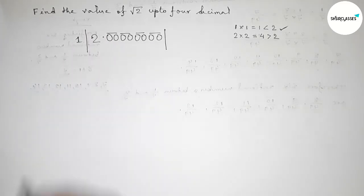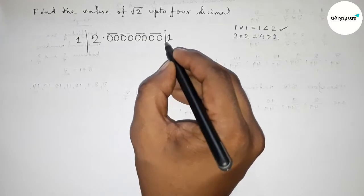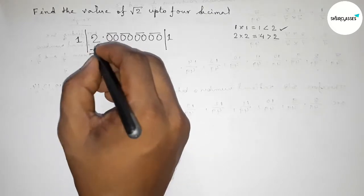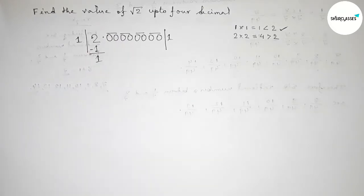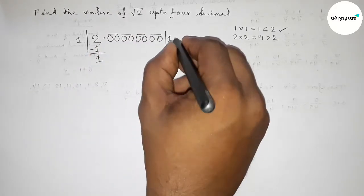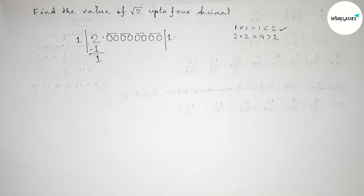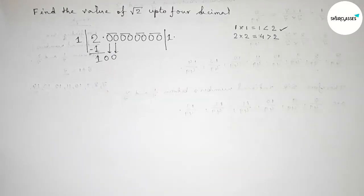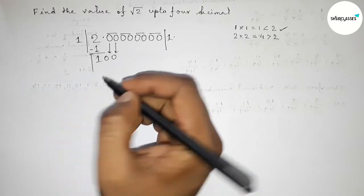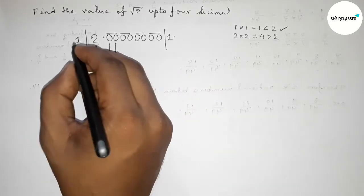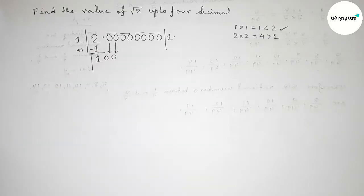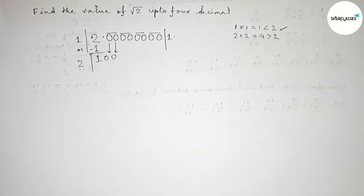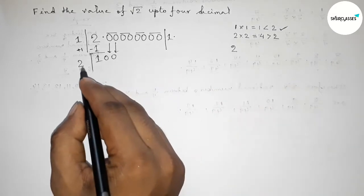Taking 1: write 1, and 1×1=1. Subtracting, we get 1. Now bring down the first pair of zeros, giving us 100. Draw a division line. An important concept here: multiply the current quotient digit by 2, so 1×2=2. We now have to put a number beside 2.